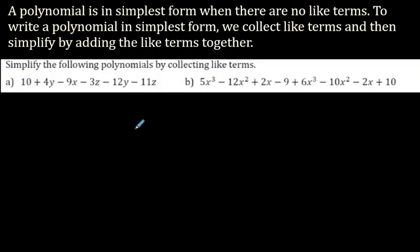A polynomial is in simplest form when there are no more like terms — when you simplify things so there are no more like terms. You put the like terms together. To write a polynomial in simplest form, you collect the terms and simplify by adding the like terms together. Let's practice it — actually doing it is so much more helpful than just words.